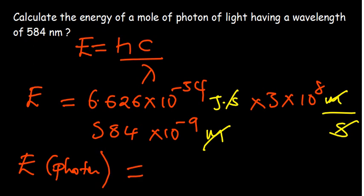6.626 by 10 to the power negative 34 multiplied by 3 by 10 to the power 8 divided by 584 by 10 to the power negative 9. The value that I'm getting is 3.404 by 10 to the power negative 19 joules.